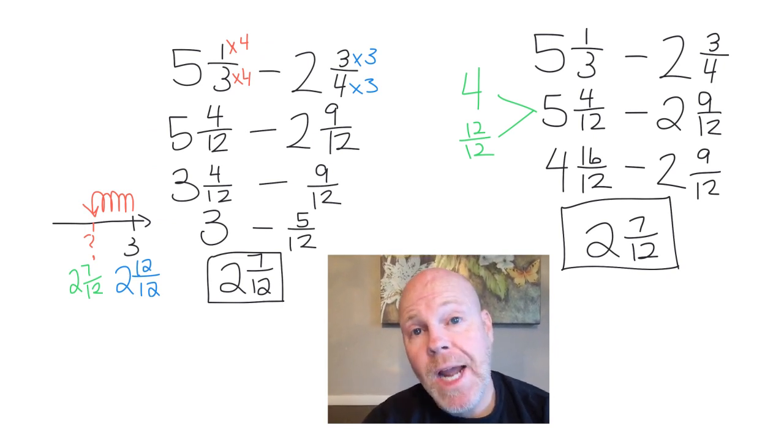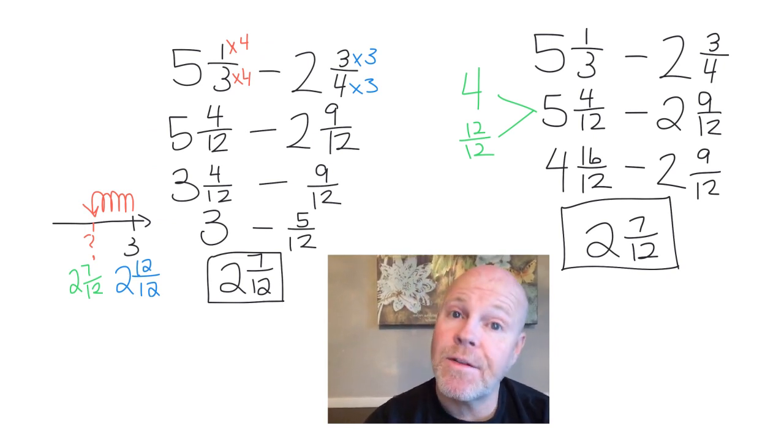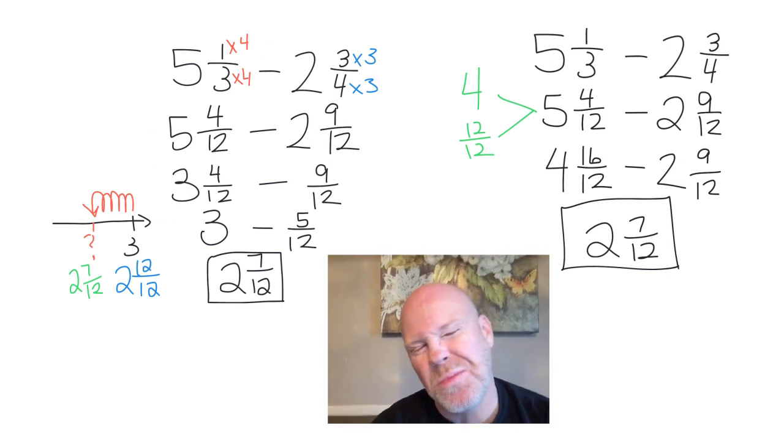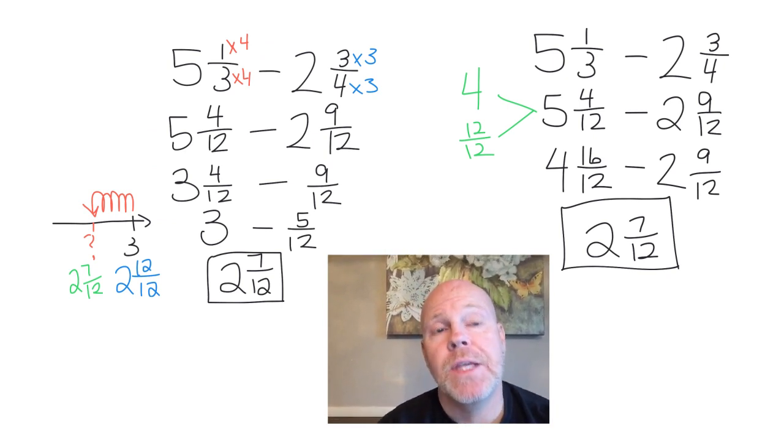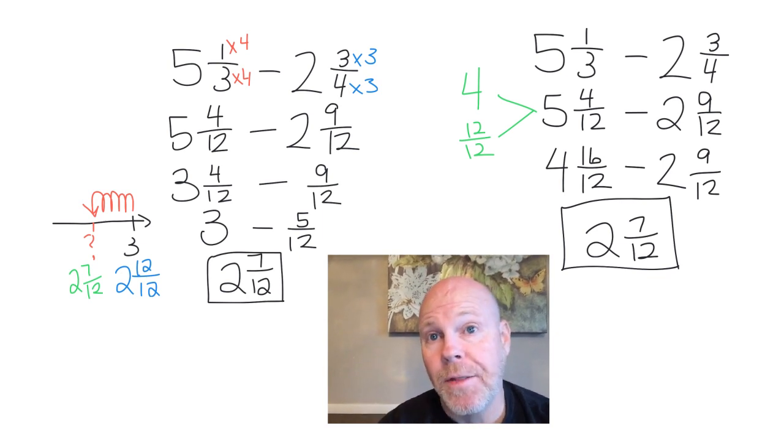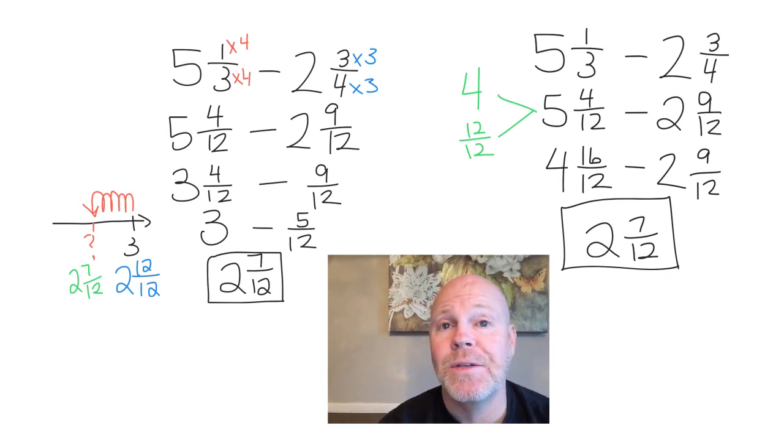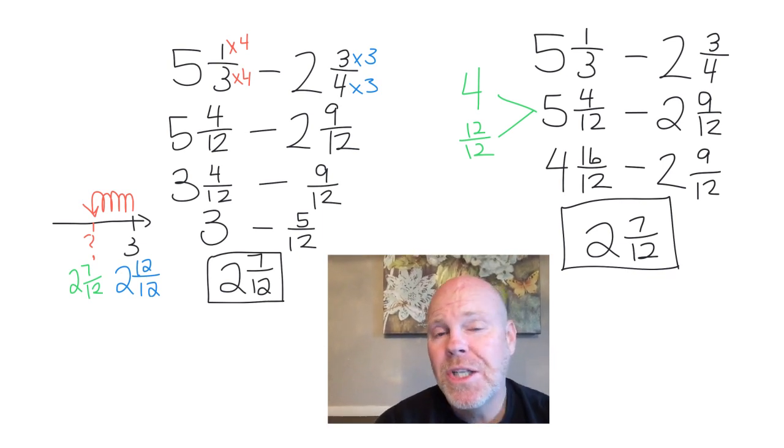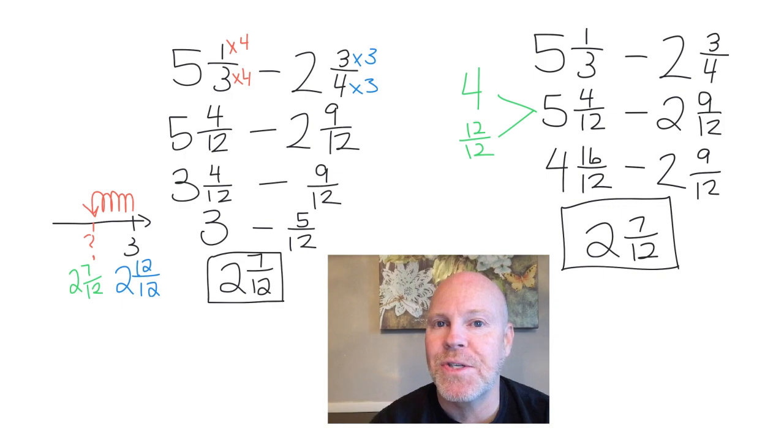So that's how you subtract fractions when the second fraction seems to be larger than the first fraction in terms of mixed numbers, right? You've got the chunking method on the left. You've got the regrouping method on the right. They both work. They're both about the same amount of work. Just choose the method that makes the most sense to you.